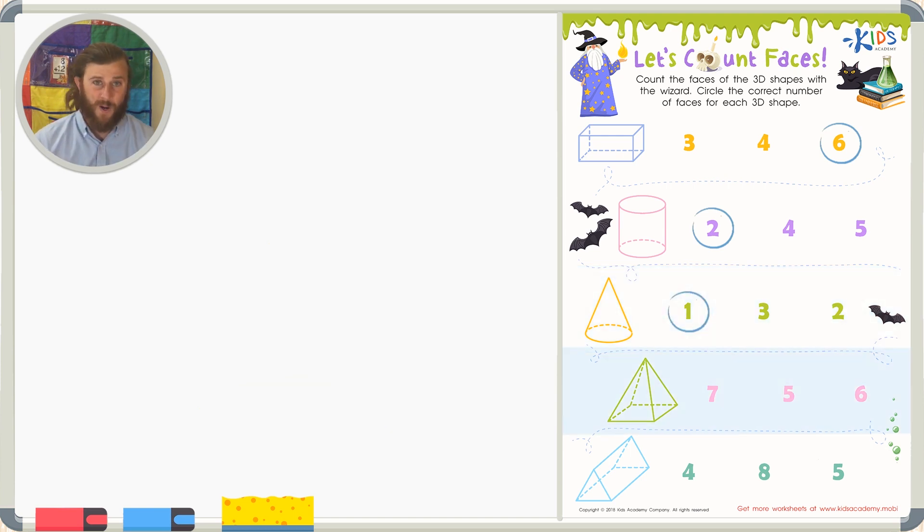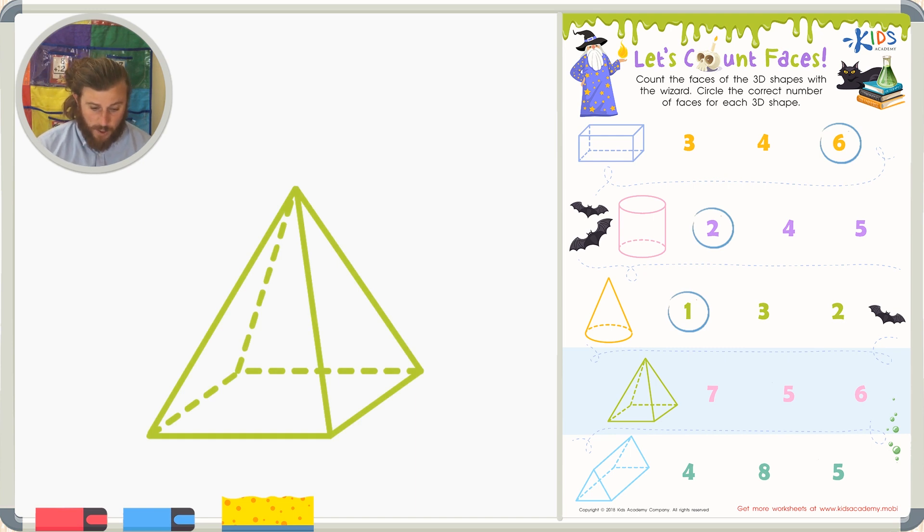For our next shape, we have a pyramid. Now, for our pyramid, we're going to have to do a little bit of imagining, just like we did for our rectangular prism and our cube. So, for our pyramid, let's go ahead and count some of those faces we see. I see the front face, that's one. I see the side face, that's two. I know if there's a front face, there's going to be a back face, that's three. And there's another side face, that's four.